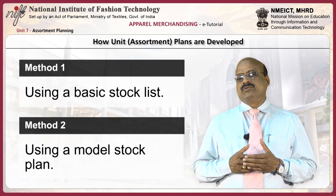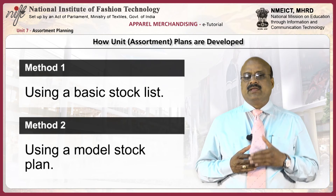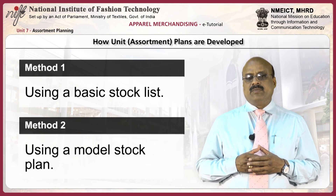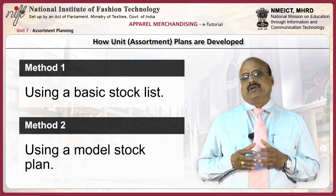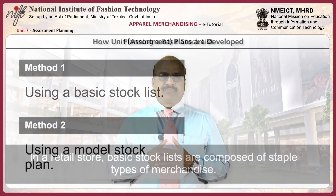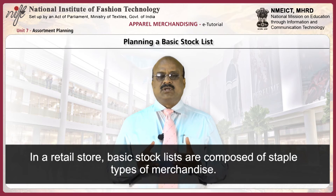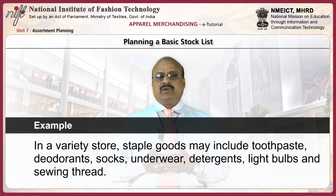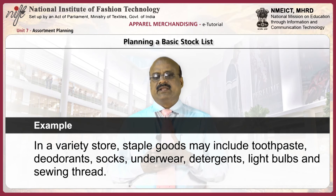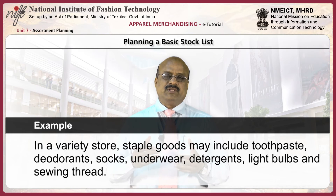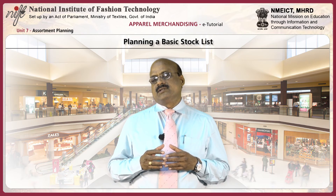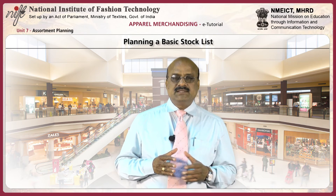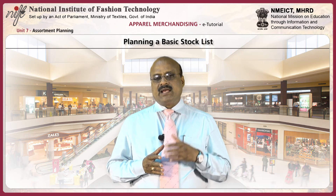Assortment plans are developed in one of two ways: the first method is through use of a basic stock list, and the second method is through use of a model stock plan. In a retail store, basic stock lists are composed of staple types of merchandise — for example, in a variety store, staple goods may include toothpaste, deodorants, socks, underwear, detergents, light bulbs, and sewing threads. When planning staple merchandise assortments, buying specialists should consider homogeneous and heterogeneous staples, as well as seasonal and non-seasonal staples.